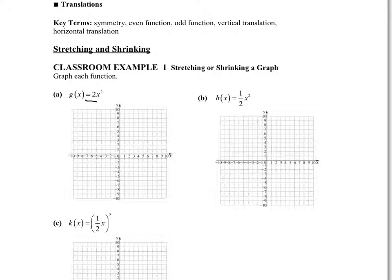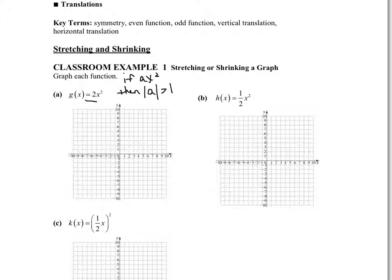That coefficient is going to tell us whether the graph is stretched vertically or shrunk vertically. If it's stretched vertically, that will make it appear narrower. If it is shrunk or compressed vertically, that will make it appear wider. So the value of that coefficient tells us if it stretches or shrinks. Here is the basic rule: if we have some value in front of our function, we're not going to pay attention to whether it's positive or negative — we're just going to look at the absolute value of that coefficient. If it's greater than one, then we have a vertical stretch.